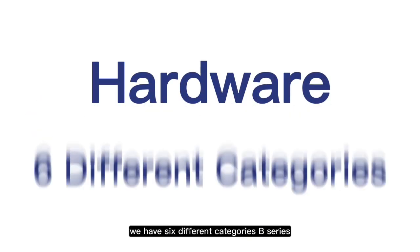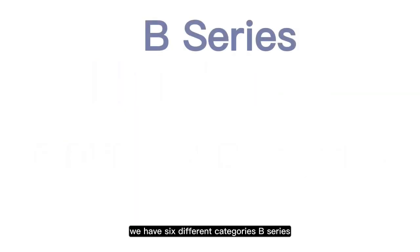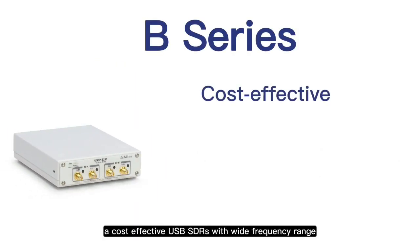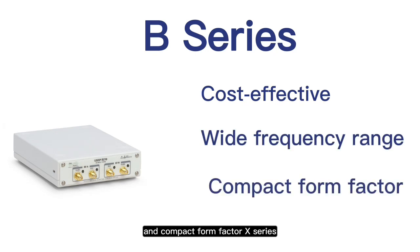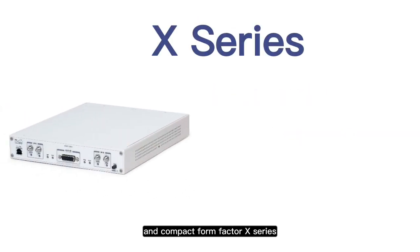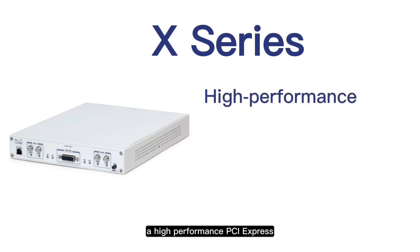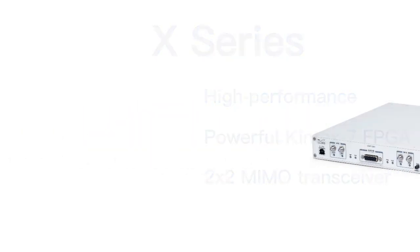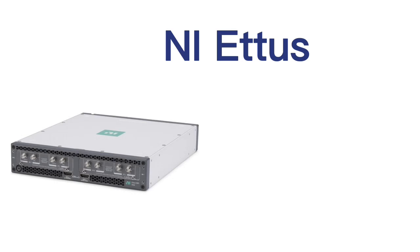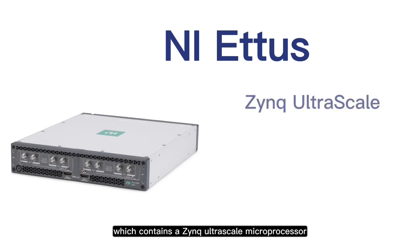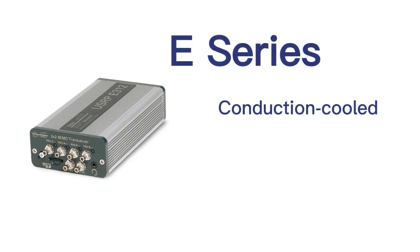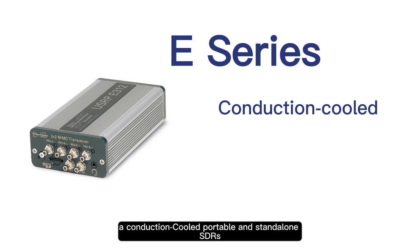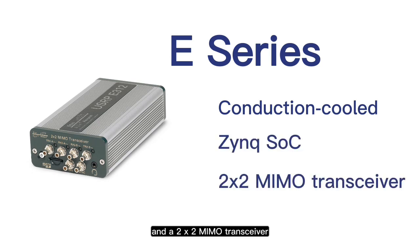In terms of hardware we have six different categories. B series: a cost-effective USB SDR with wide frequency range and compact form factor. X series: a high-performance PCI Express based on a powerful Kintex 7 FPGA and a 2x2 MIMO transceiver. NI EDIS: the highest performance X series USRP which contains a Zynq UltraScale microprocessor and a radio frequency system on chip for 4x4 MIMO and wider bandwidth. E series: a conduction cooled, portable and standalone SDR containing a Zynq system on chip and a 2x2 MIMO transceiver.